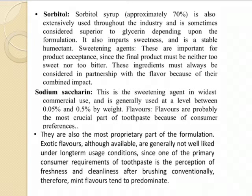The second major humectant is sorbitol. Sorbitol syrup at approximately 70% concentration is extensively used throughout the industry and is sometimes considered superior to glycerin, depending upon the formulation. It also imparts sweetness and is a stable humectant. Sweetening agents are important for consumer acceptance since the final product must be neither too sweet nor too bitter, and these ingredients must always be considered in partnership with flavor because of their combined impact.